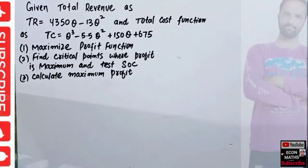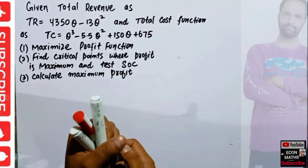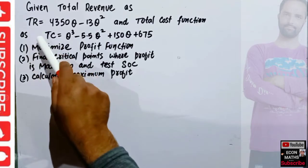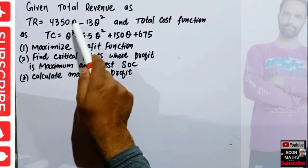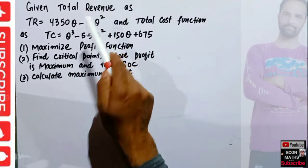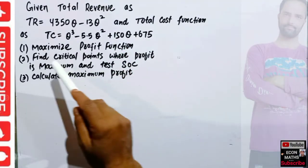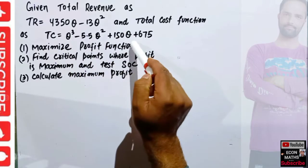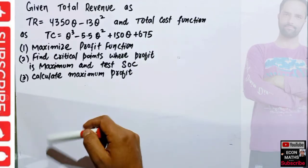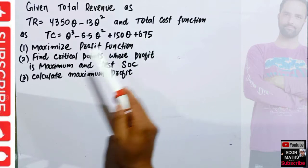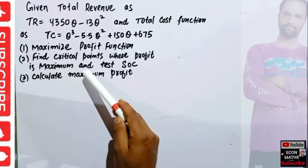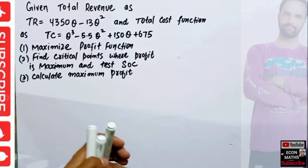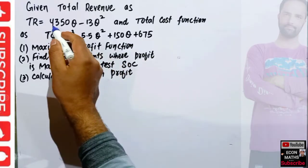In this video we will solve a problem on profit maximization. The question is: given total revenue function TR = 4350Q − 13Q², where Q denotes the output, and total cost function TC = Q³ − 5.5Q² + 150Q + 675, we have to first maximize the profit function, find the critical points where profit is maximum, test the second order condition, and calculate the maximum profit.